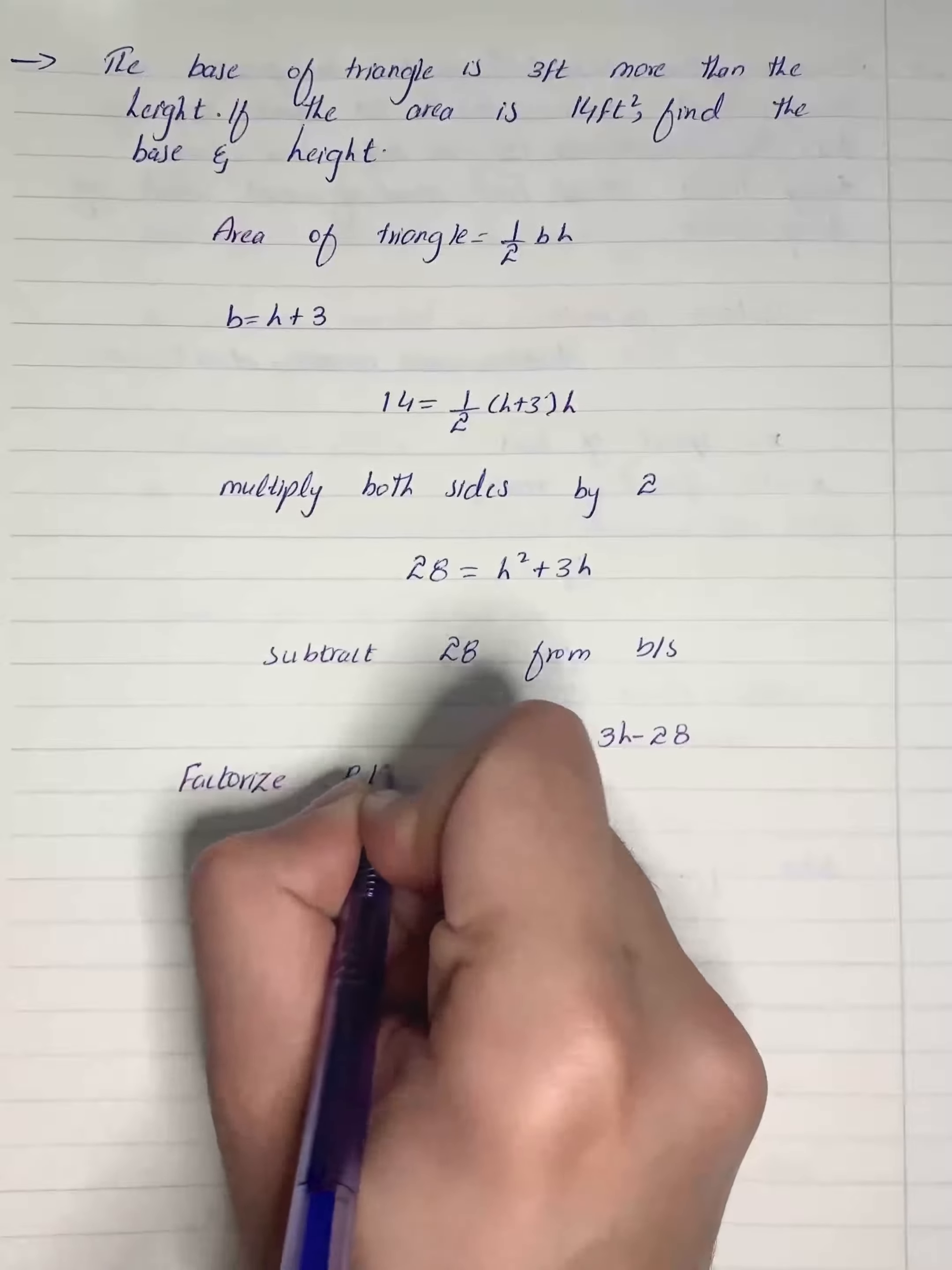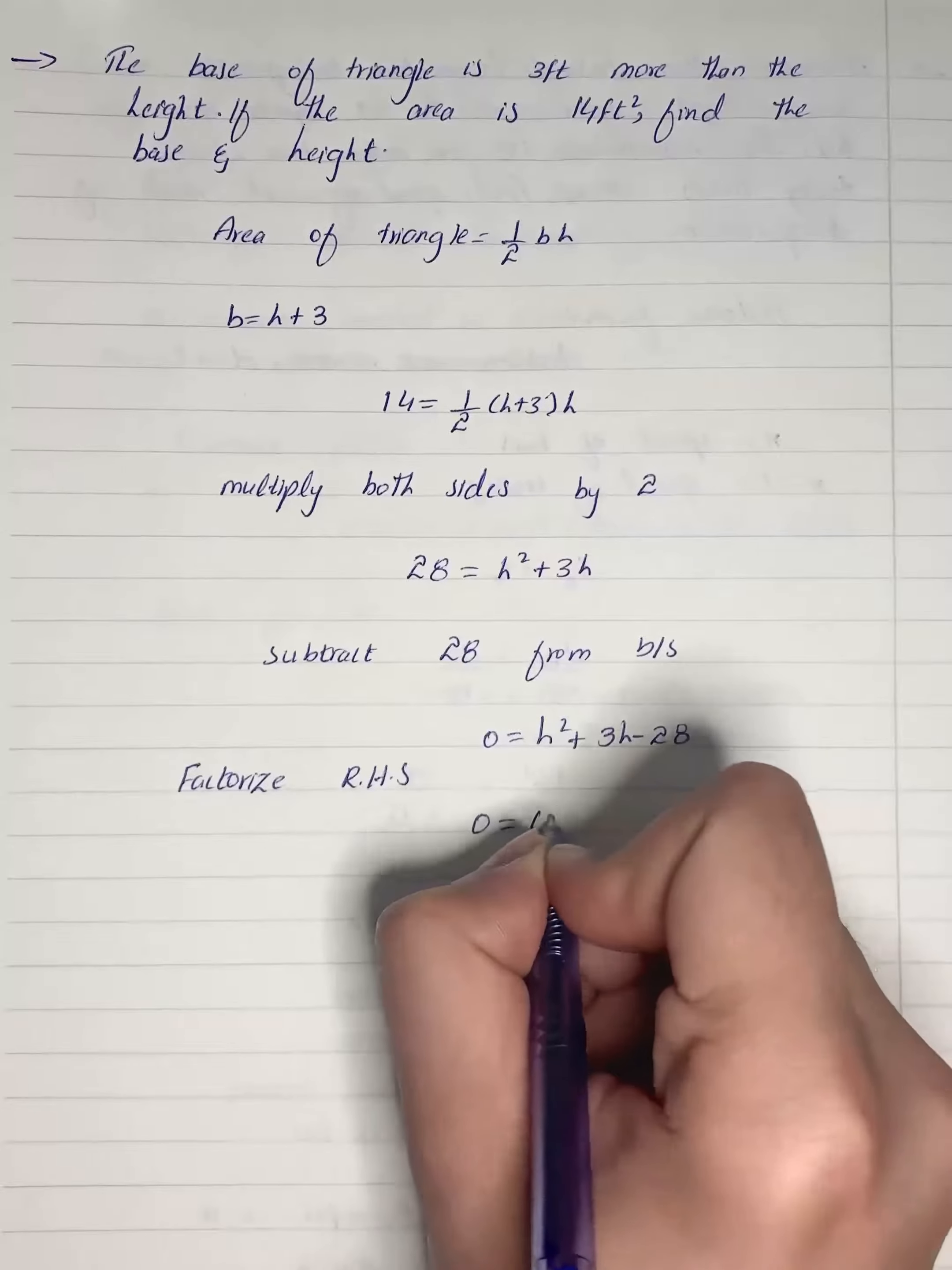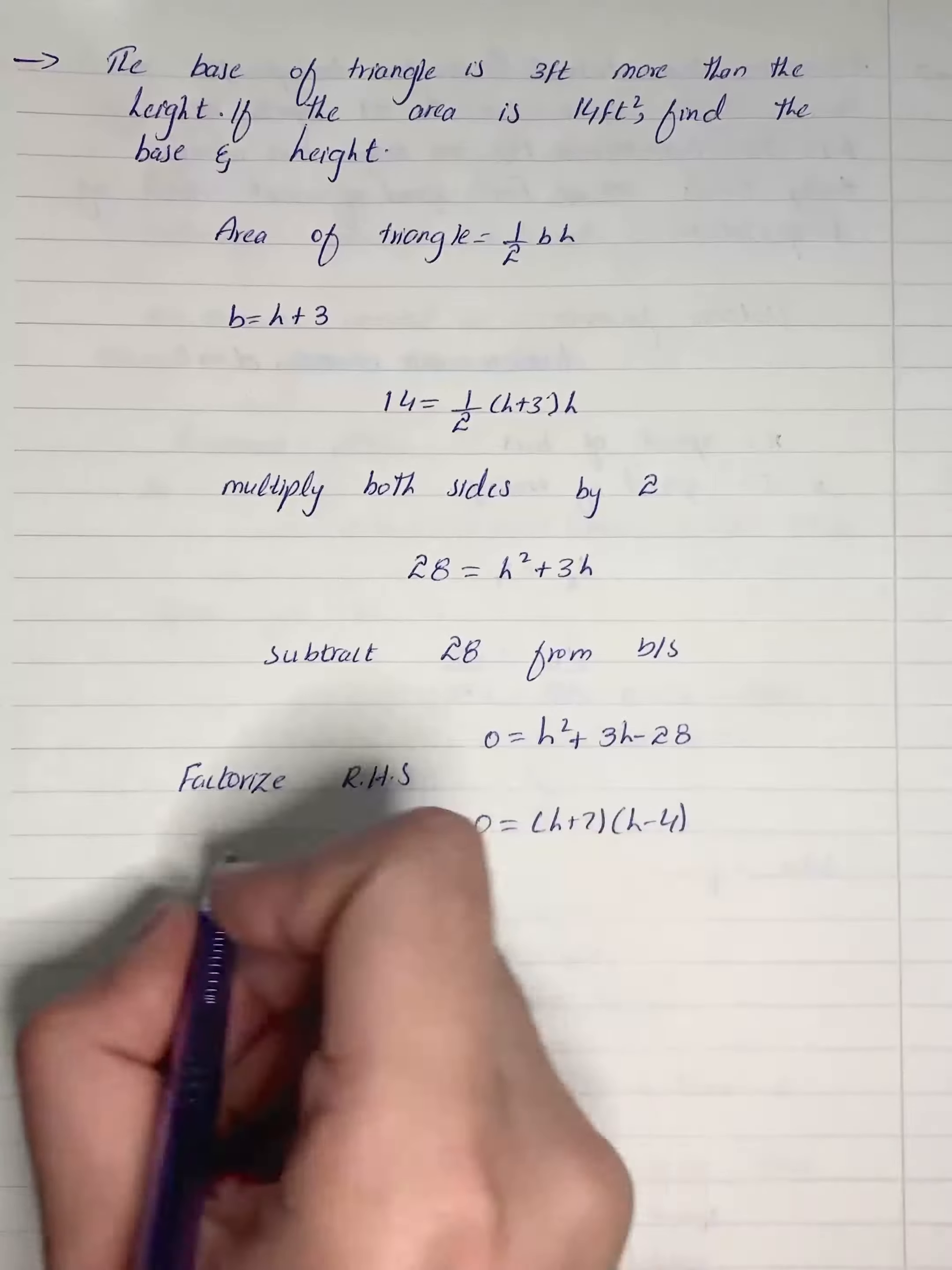Factorize right hand side. It will give us h plus 7 into h minus 4. Now we will apply zero product property.